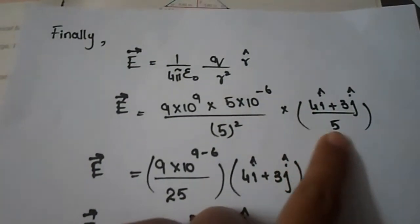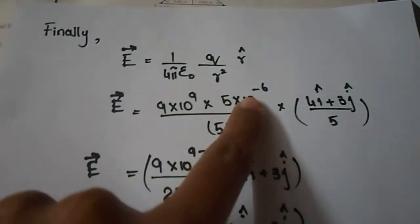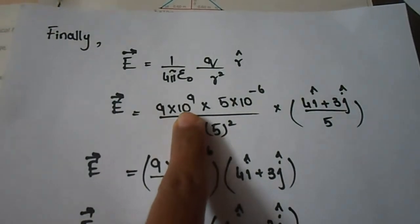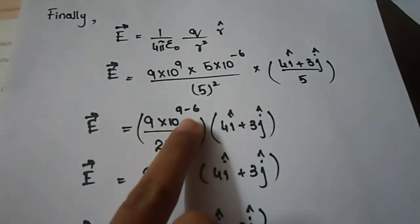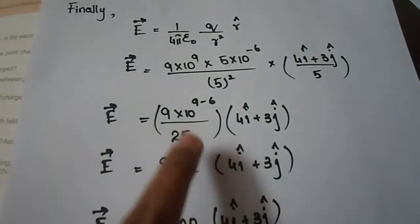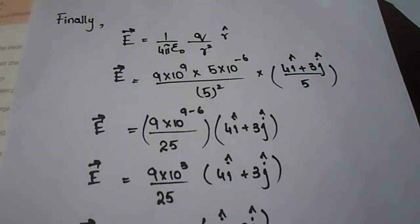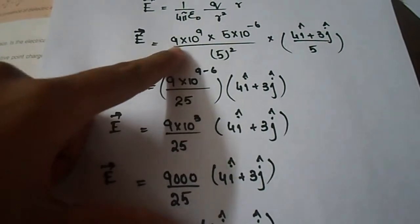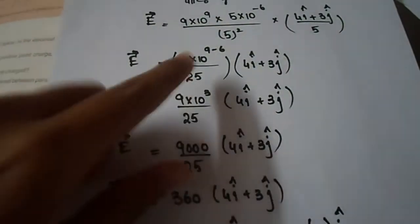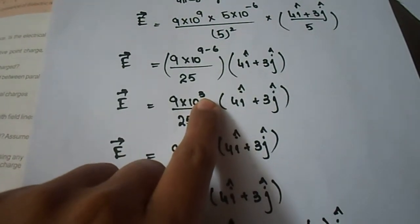What we have done is that 10 powers we will simplify - the basis is the same so powers will add up: 9 minus 6 equals 3. This 5 and the other 5 cancel out, then we have 5 squared which is 25. And when we have 10 power 3, that's 1000.